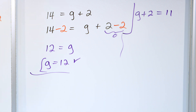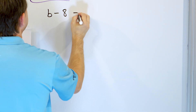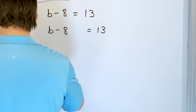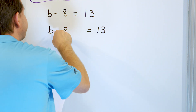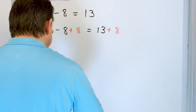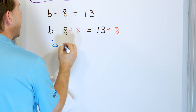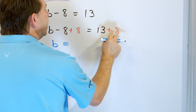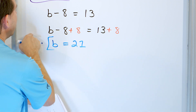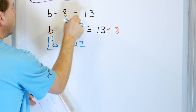What about b minus 8 equals 13? Rewrite the equation: b minus 8 equals 13. I've got a subtraction of 8. I want to get rid of that by adding 8 — that's doing the opposite. On the left-hand side I have b; negative 8 plus 8 gives me 0, so all I have left is b. 13 plus 8 is 21. Check it: put 21 in there. What is 21 minus 8? That gives you 13.